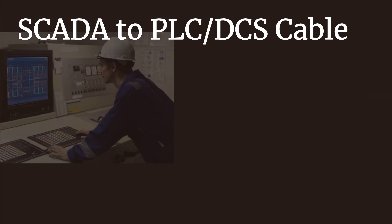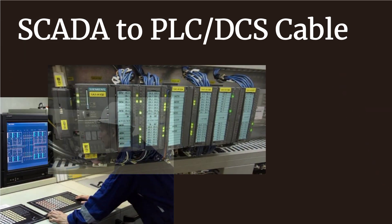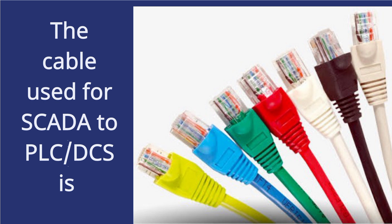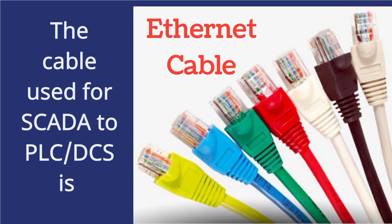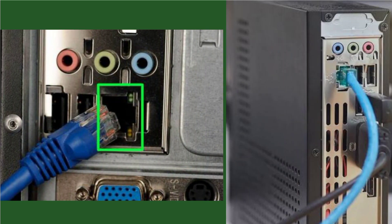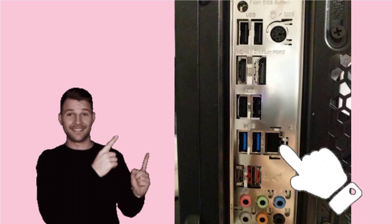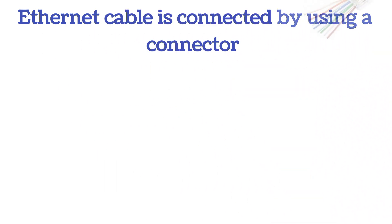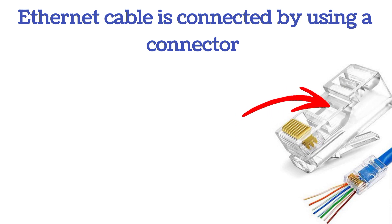Now we will discuss the cable used from SCADA to PLC/DCS. This is an important cable, so please listen carefully. The cable used for SCADA to PLC/DCS is Ethernet cable, as shown in the image. The Ethernet cable connection is shown by a rectangle. The port where the Ethernet cable is connected is shown by a finger arrow, and the connector for the Ethernet cable is shown by a red arrow.